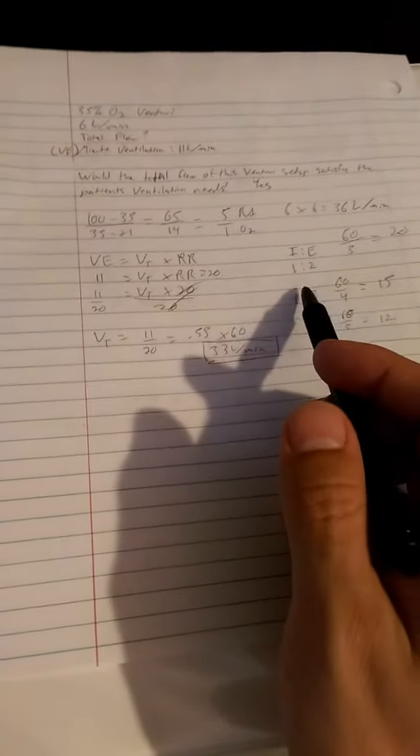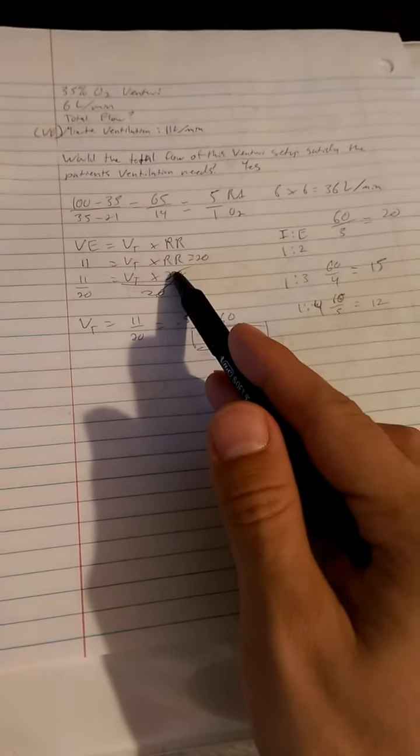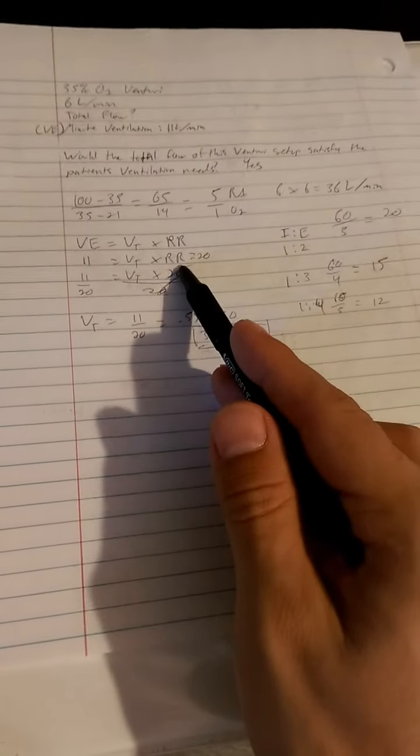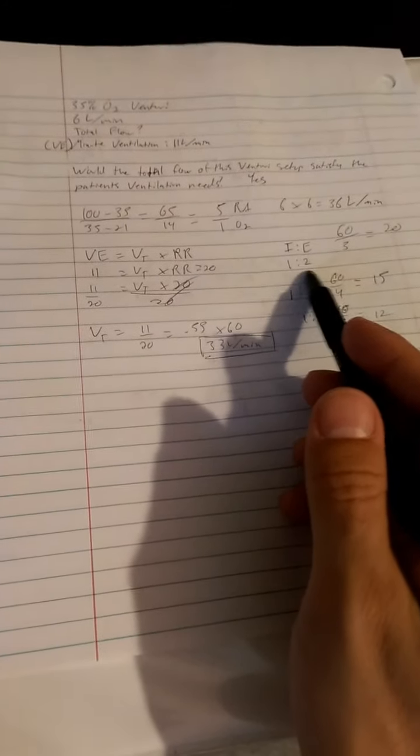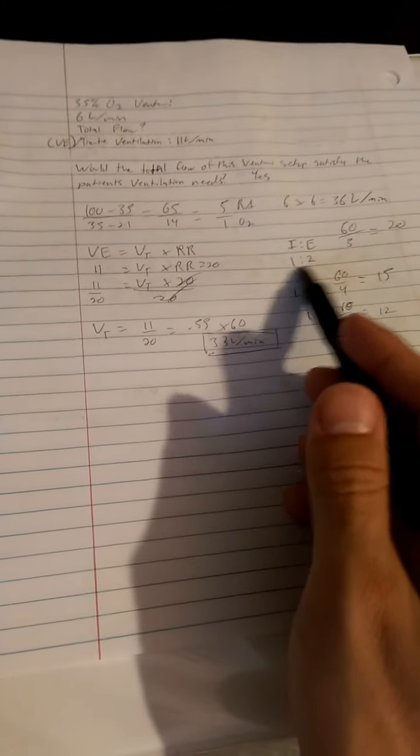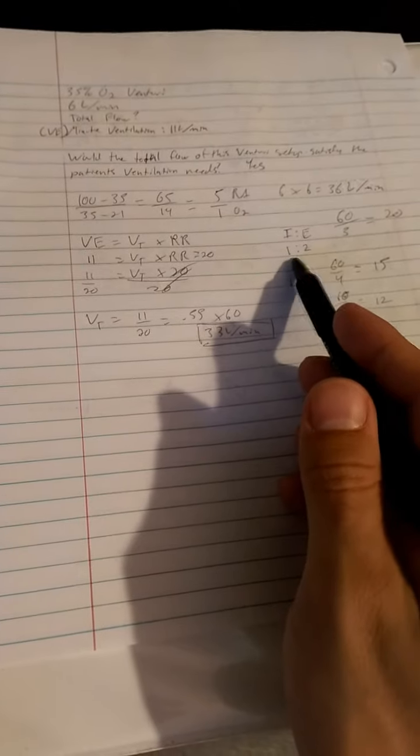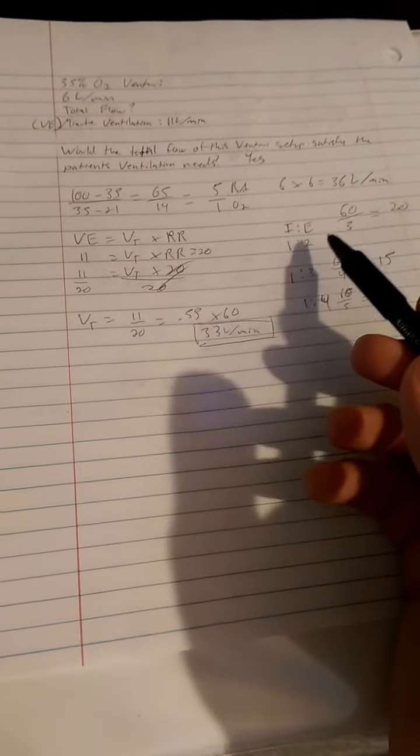But whenever you're not given a specific respiratory rate or you're not given anything other than normal—if they don't indicate anything other than normal—it can be assumed that 1 to 2 is your respiratory ratio.